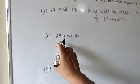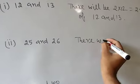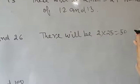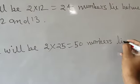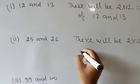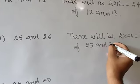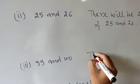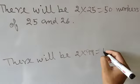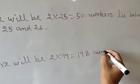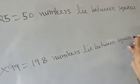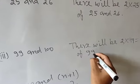For 25 and 26: n=25, so there are 2×25 = 50 numbers lying between squares of 25 and 26. For 99 and 100: there are 2×99 = 198 numbers lying between squares of 99 and 100.